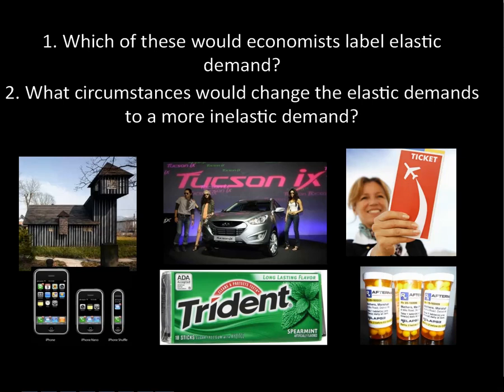Which of these products would economists label as having elastic demand? We've got housing, a Hyundai Tucson, an airline ticket, an iPhone, Trident gum, and some kind of pharmaceutical drug. I want you to think about that — if you want to pause the video for a second, that's a good idea.